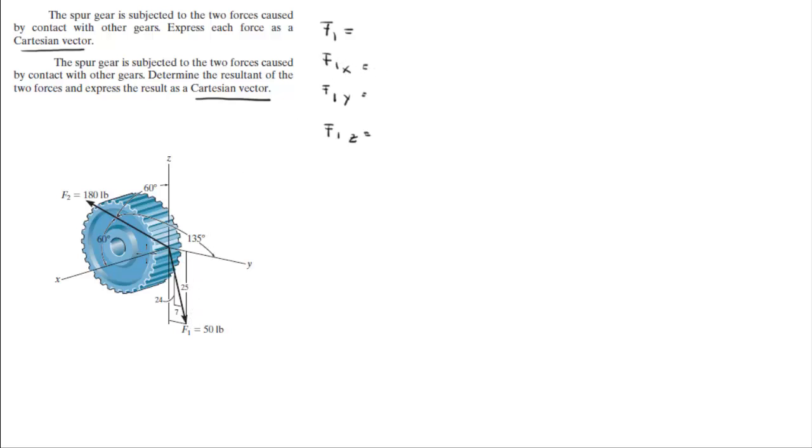Now F1 in the x is obviously 0, has no magnitude whatsoever in the x direction. The y can be calculated by multiplying its magnitude which is 50 by 7 and dividing it by 25, which gives you 14. The z component can be found by multiplying 50 by 24 and divided by 25, which gives you 48, but it's negative because notice that it's going in the negative z direction. So the values are 0 for the i plus 14 for the j minus 48 for the k.